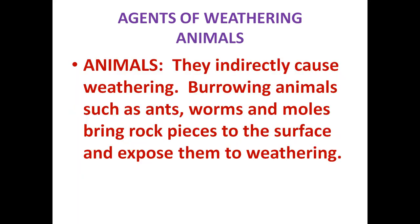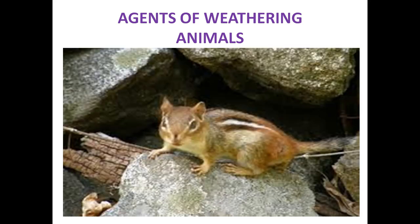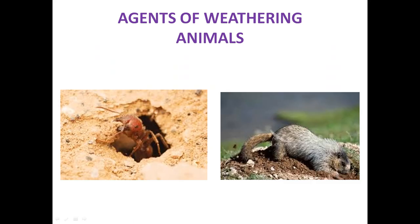The next agent is animals. Animals also play a role in weathering, though not directly. Burrowing animals like ants, worms, and moles bring rock pieces from under the surface up to the surface, thereby exposing these pieces to weathering. Here we see examples — a burrowing animal, an ant bringing rock particles outside, and another burrowing animal — showing how animals play an important role in the weathering of rocks.